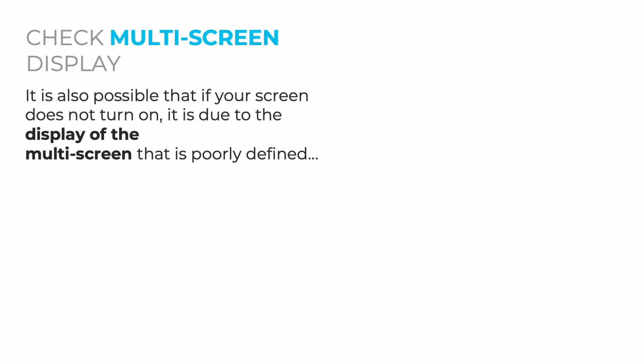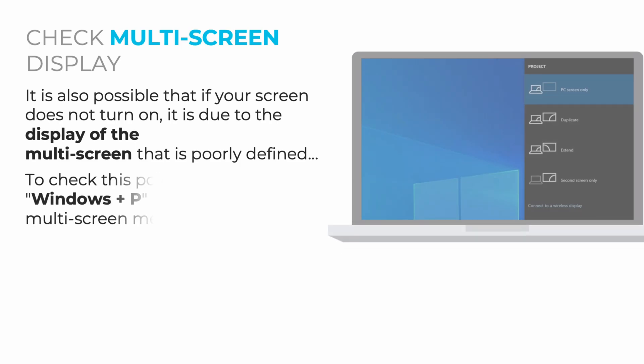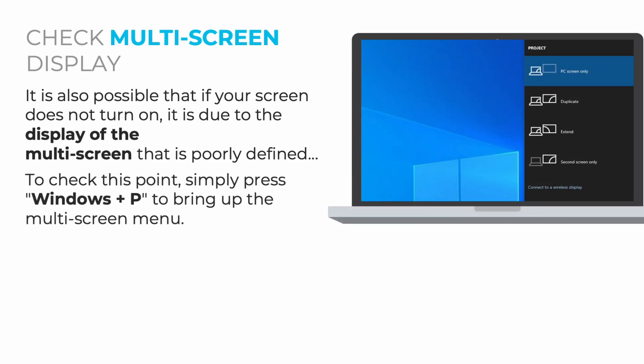It is also possible that your screen doesn't turn on because the multi-screen display is poorly configured. For example, the display could be set to a second screen that doesn't exist, which would explain why your screen doesn't turn on. To check this, press Windows + P to bring up the multi-screen menu. The first option is the default; to switch to other displays, press P and confirm with Enter.